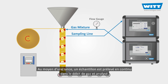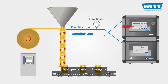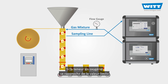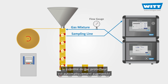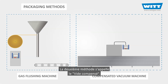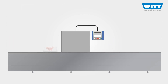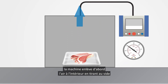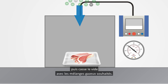By means of a lance, a sample is taken continuously from the pillow bag and analyzed. As long as the oxygen value is below the set limit value, the amount of supplied protective gas is reduced. If the oxygen content approaches the limit value, the protective gas quantity is automatically increased. The second method is called compensated vacuum. In this method, the machine first removes the air inside by pulling a vacuum within the package, and then breaks the vacuum with the desired gas mixture.